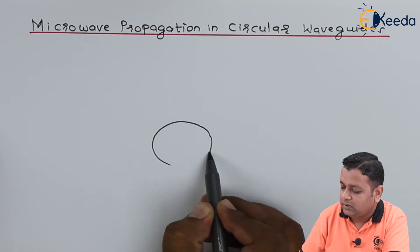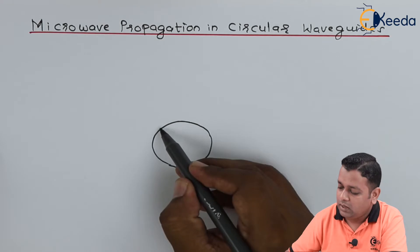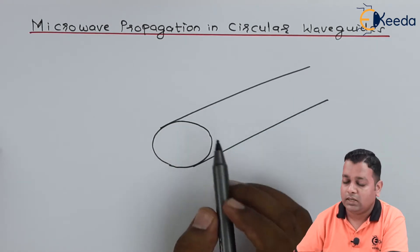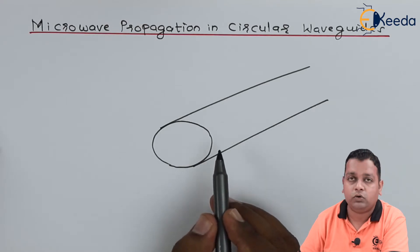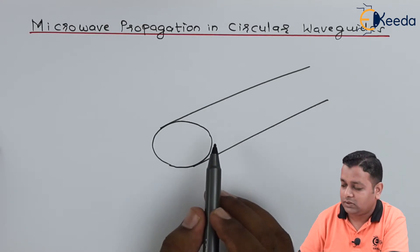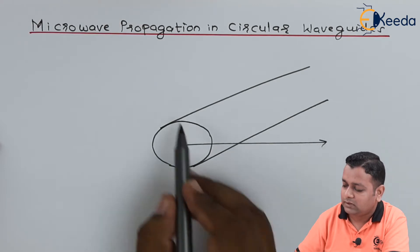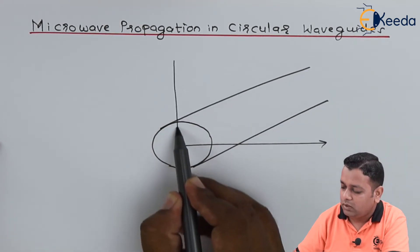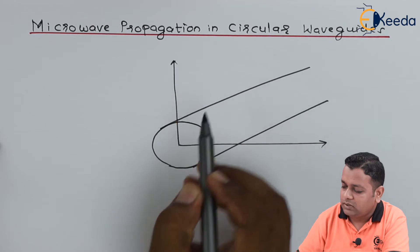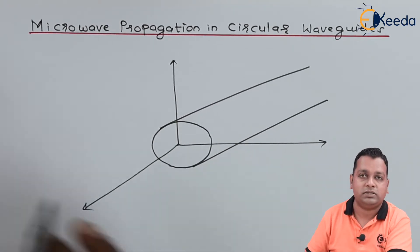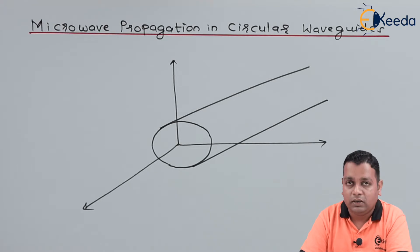So let us see, this is a circular cross section and the length of the waveguide is like this. So this is a hollow metallic tube having circular cross section. For analysis purpose we can take the axis into consideration from the rectangular coordinate system as well as from the cylindrical coordinate system.